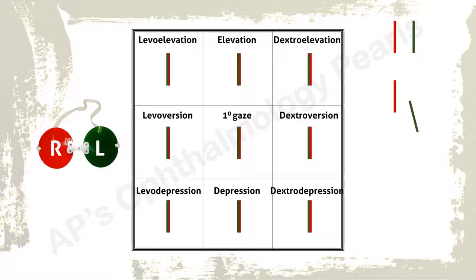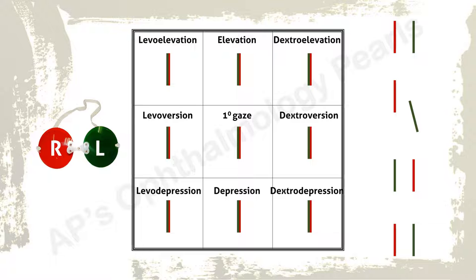Next, one should determine whether it is a crossed or uncrossed diplopia. Uncrossed diplopia means that the image seen through the right eye — that is, the red image — is seen on the right. This is crossed diplopia. Even in vertical diplopia, crossed or uncrossed refers to the horizontal orientation of the images.